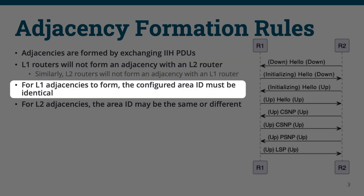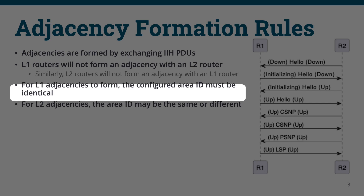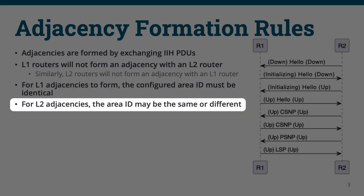For a Level 1 adjacency to form, the area IDs must be identical. Level 2 adjacencies, however, are able to form between routers in different areas.